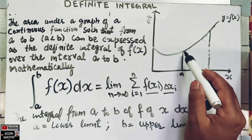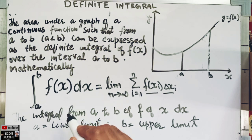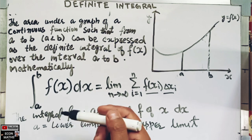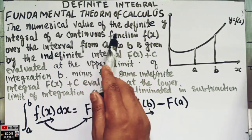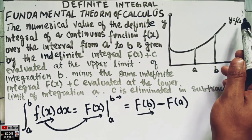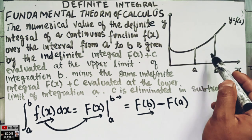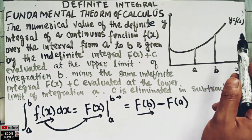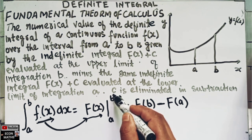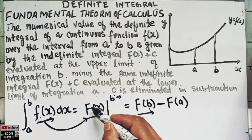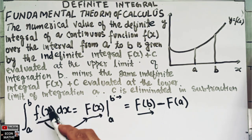The definite integral gives a real number. It can be evaluated using the fundamental theorem of calculus, which states: the numerical value of the definite integral of a continuous function f(x) from a to b is given by the indefinite integral F(x) evaluated at the upper limit b minus the same indefinite integral F(x) evaluated at the lower limit a.